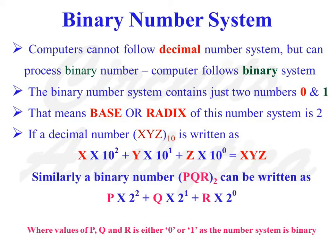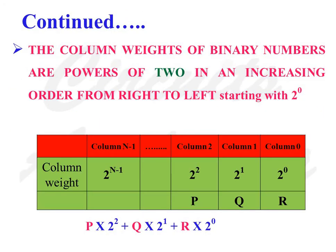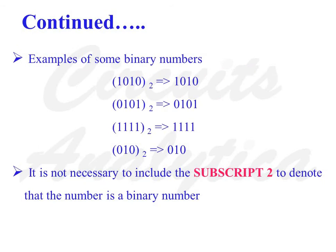Here, P, Q, and R are either 1 or 0, as the number system is binary. The column weights of binary numbers are powers of 2 in increasing order from the rightmost digit towards the left. That means the column weight of the rightmost digit in a binary number is 2 raised to 0. Examples of some binary numbers: 1010, 0011, 1101, 0100. It is not mandatory to include the subscript 2 to denote that a number is binary.